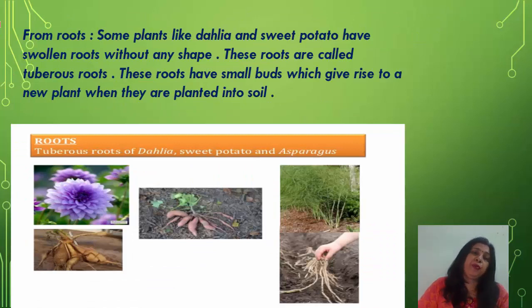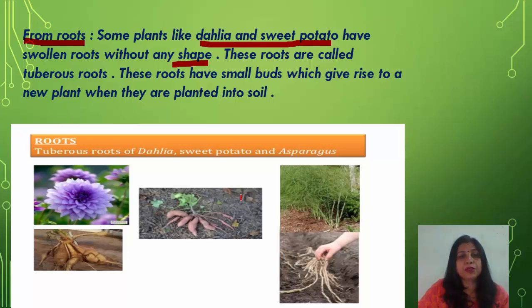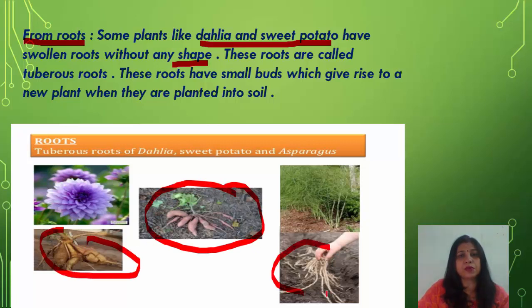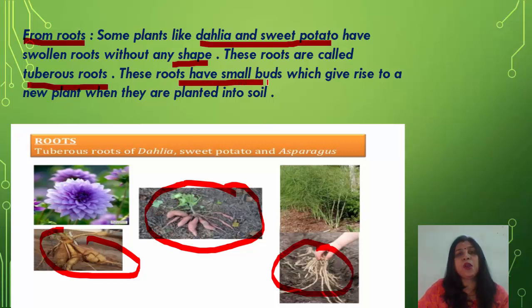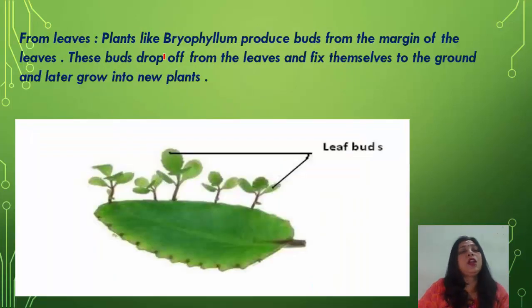In vegetative propagation from roots, some plants like Dahlia and sweet potato have swollen roots without any regular shape. These are called tuberous roots. These roots have small buds which give rise to a new plant when planted into soil.